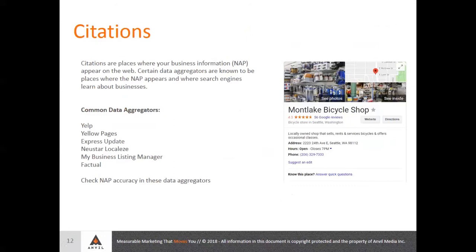So if you have a bunch of incorrect citations — meaning your name is incorrect, the address is wrong, the business hours are wrong, or the phone number is wrong — it's possible that that information could be wrongly displaying in a knowledge panel. Nothing's more frustrating than showing up to a business that you think closed at 7 o'clock when it really closed at 6. Most of these data aggregators allow you to fairly easily make changes, so definitely check periodically to make sure your citations are accurate.